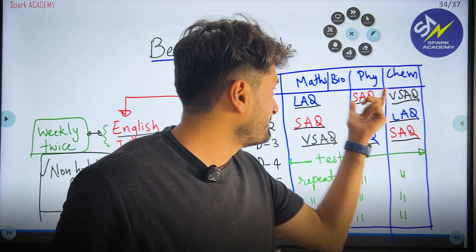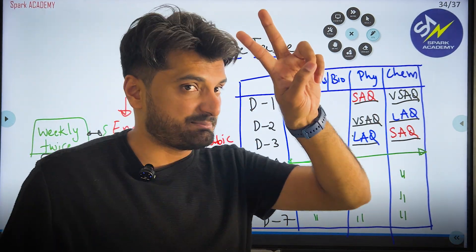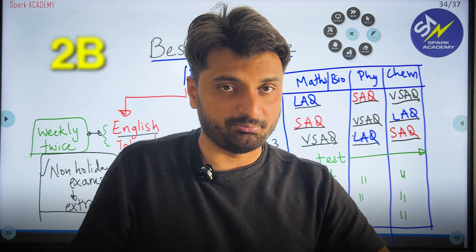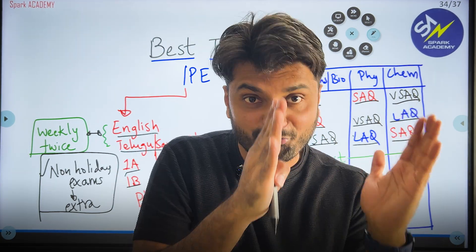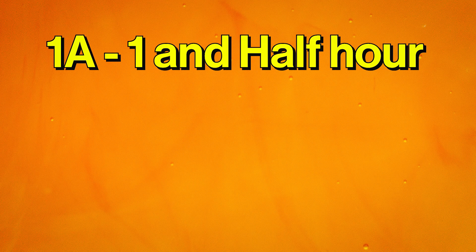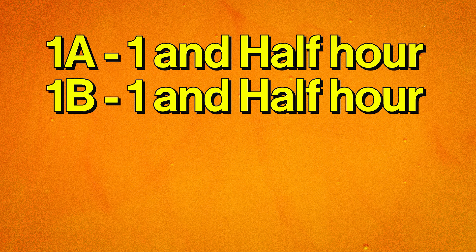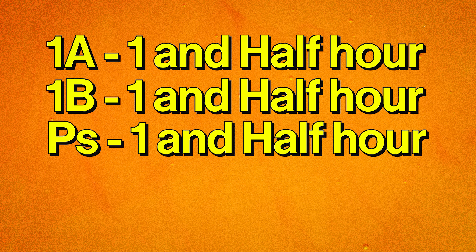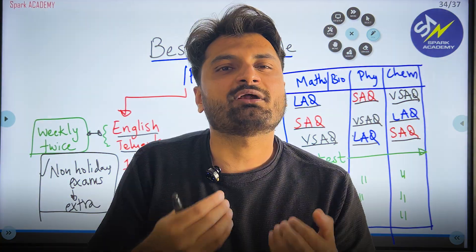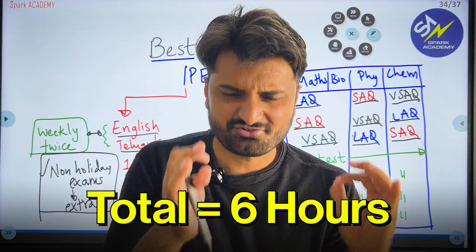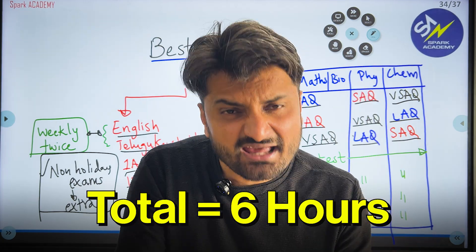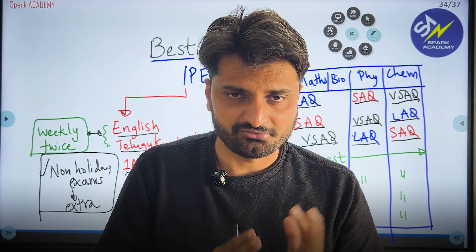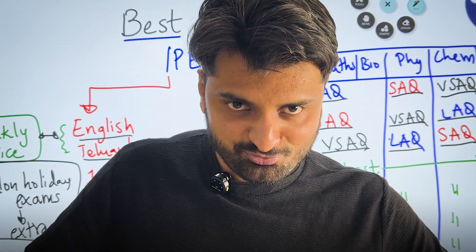For Maths you have two papers — 1A and 1B or 2A and 2B. Spend one hour each on 1A, 1B, Physics, and Chemistry — totaling six hours minimum. Six hours is the bare minimum time you need to spend to crack the examination. You can choose how to split it based on your comfort.